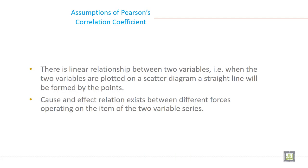Before discussing limitations, let me first discuss the assumptions of Pearson's coefficient of correlation. There is a linear relationship between two variables. That is, when the two variables are plotted on a scatter diagram, a straight line will be formed by the points.